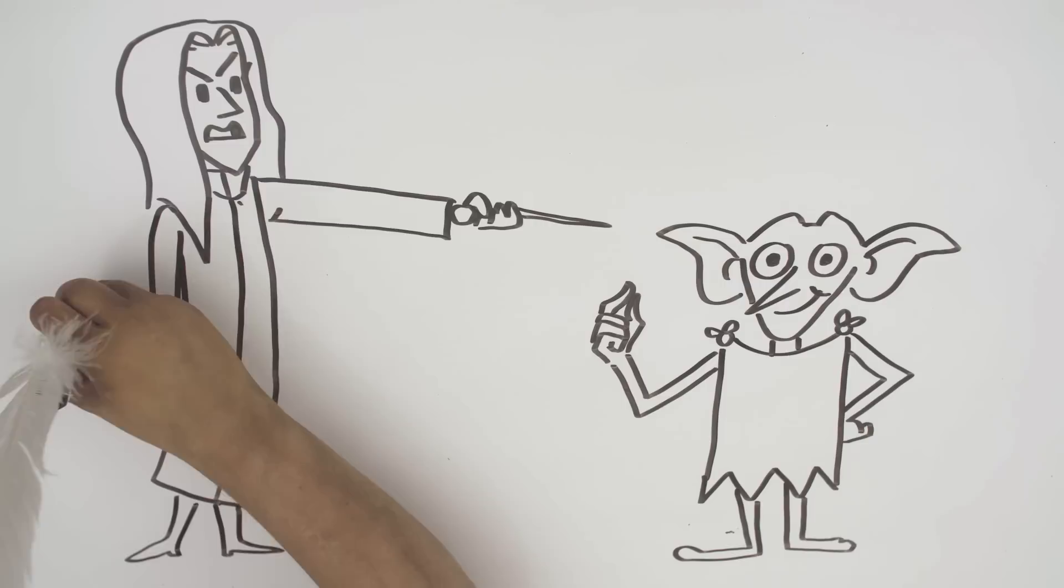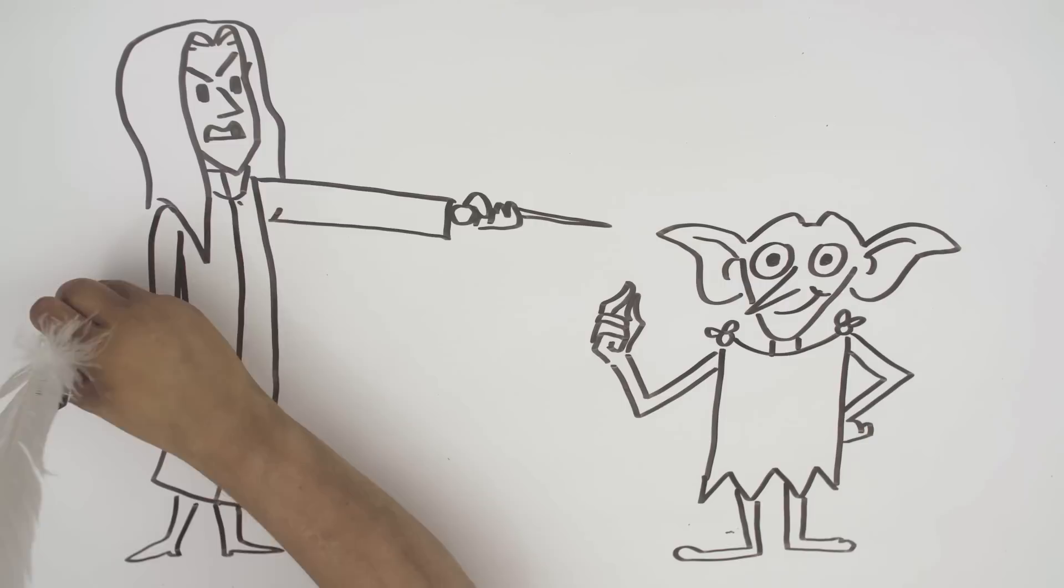Now Dobby was a free house elf and Dobby loved his friends. Dobby fought for what was right together till the end.